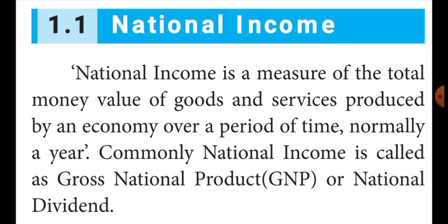Next I am going to teach the topic about various terms associated with measuring of national income. Seven terms are associated with measuring national income. The first one is gross national product, the second is gross domestic product, the third is net national product, the fourth is net domestic product, the fifth is per capita income, the sixth is personal income, and the last one is disposable income.